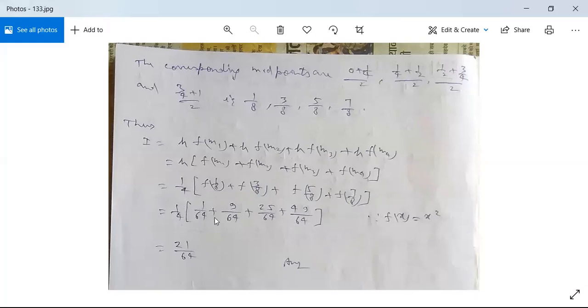Now what do we do? We add all and divide. So this is given as 21/64. So this is the midpoint rule.